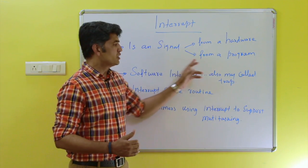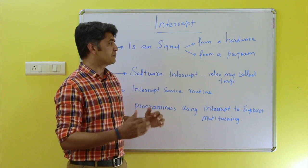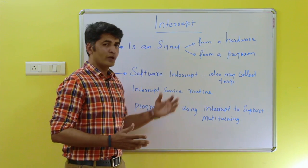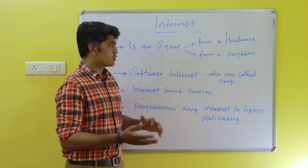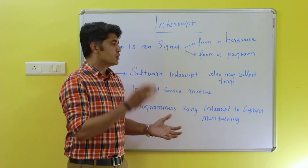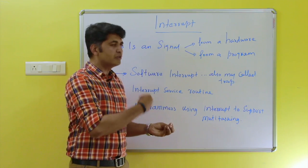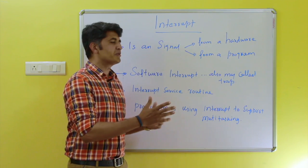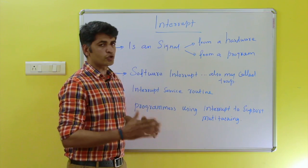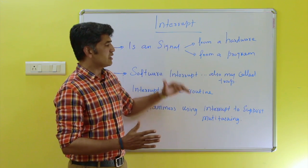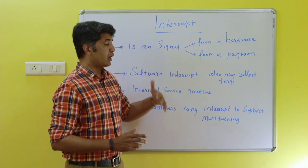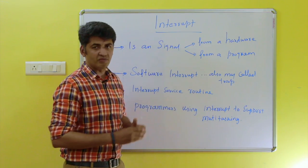Coming to the software interrupt, it can be considered as two different kinds: solvable and non-solvable. Solvable means if any error comes in the program execution, that error can be solved by a system routine — that may be called a solvable one. The non-solvable one is similar to a hardware interrupt — the system will give an intimation to the user. If a solvable interrupt occurs, what does the system do?